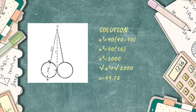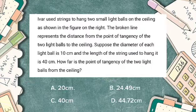To get the value of x, we need to take the square root of both sides, because the opposite of squaring is square root. The square root of x squared is x, and the square root of 2,000 is approximately 44.72. So the answer is letter D: the point of tangency of the two light bulbs from the ceiling is 44.72 cm.